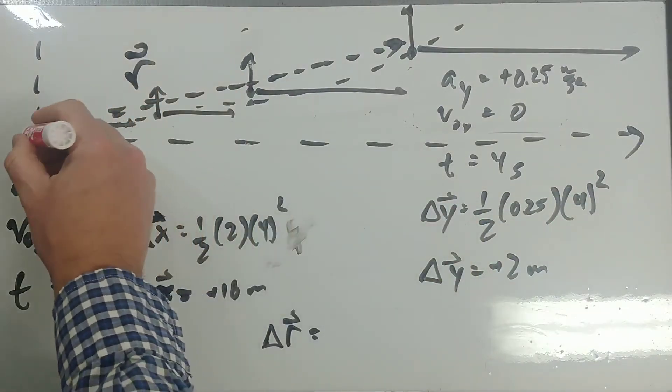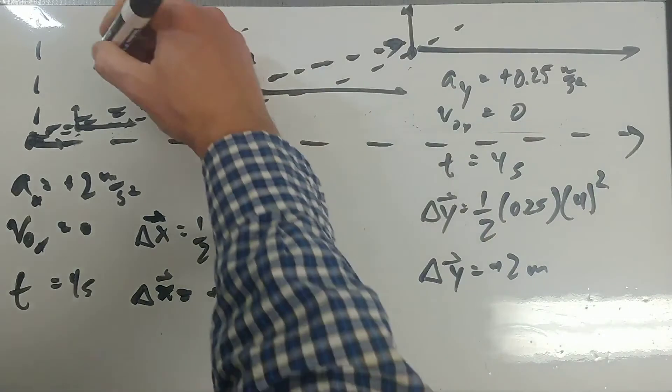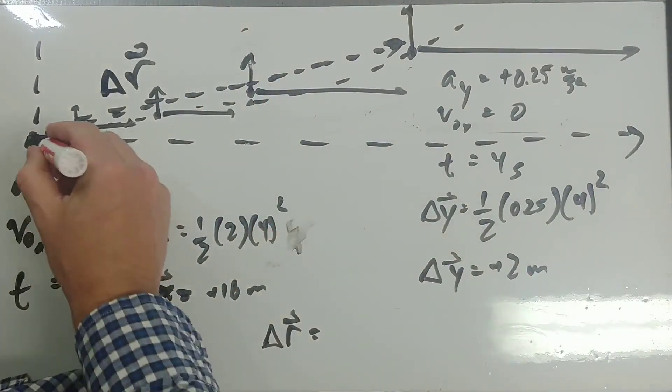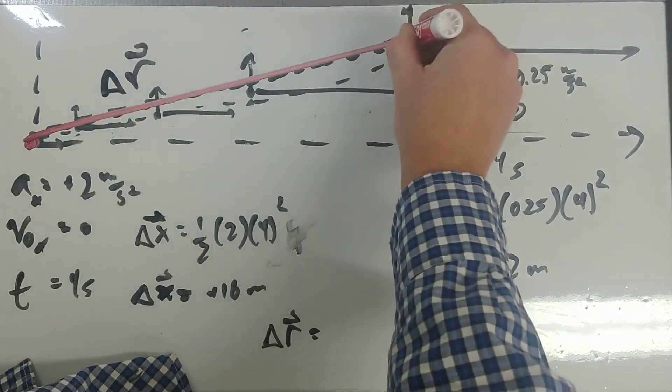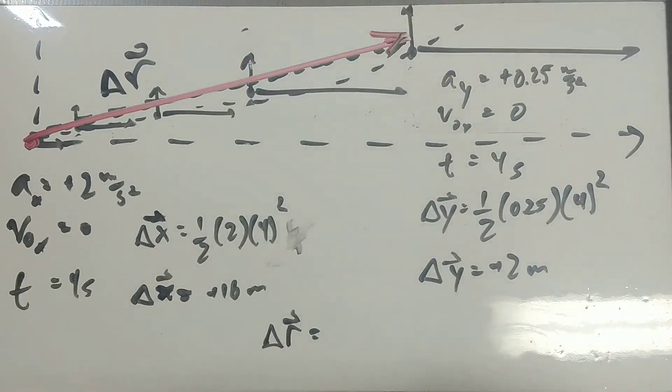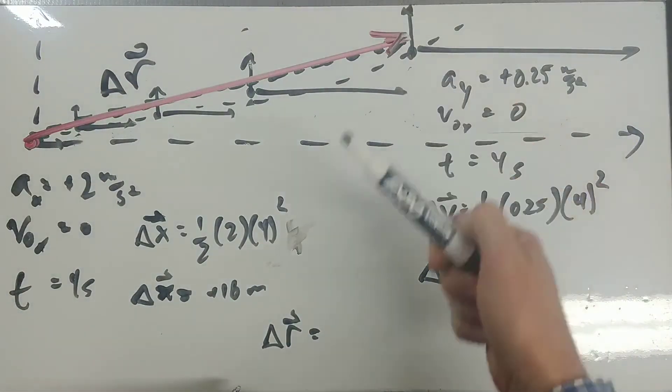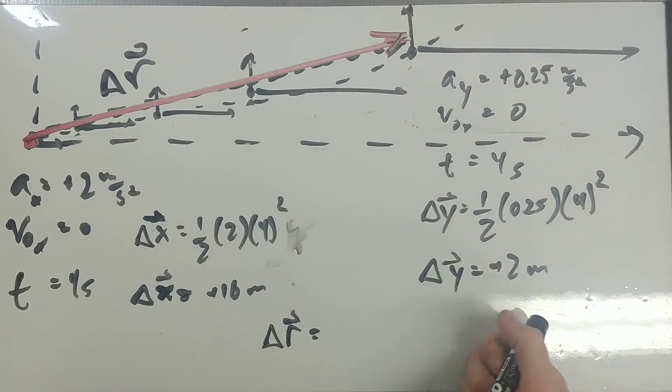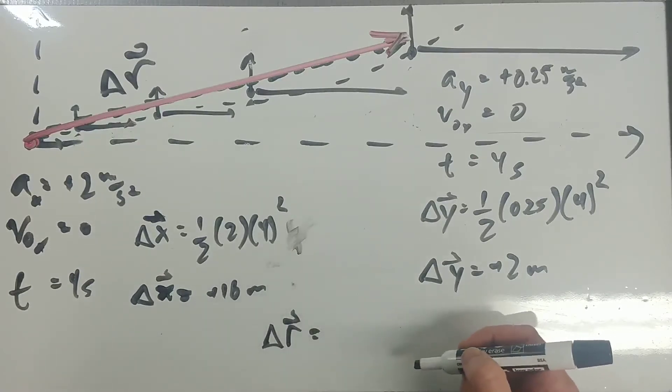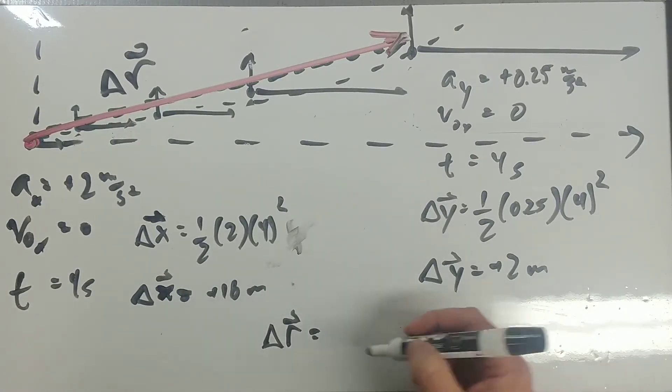The Delta R vector would be the displacement vector. That'd be the vector from where it started straight to where it finished. That would be the displacement vector. Its position would be a specific x and y coordinate, which makes sense written in a little different notation that we'll find out later on.